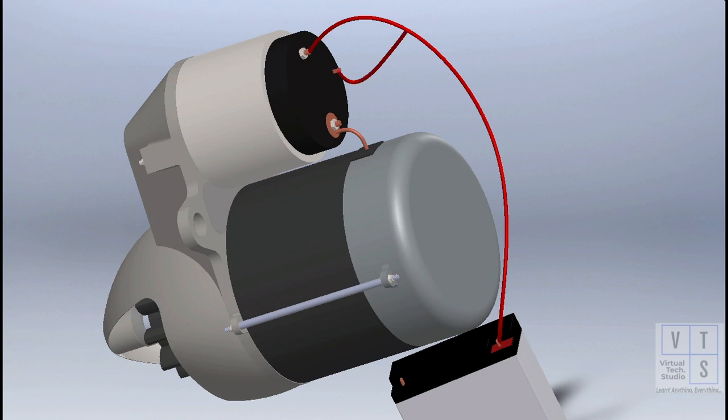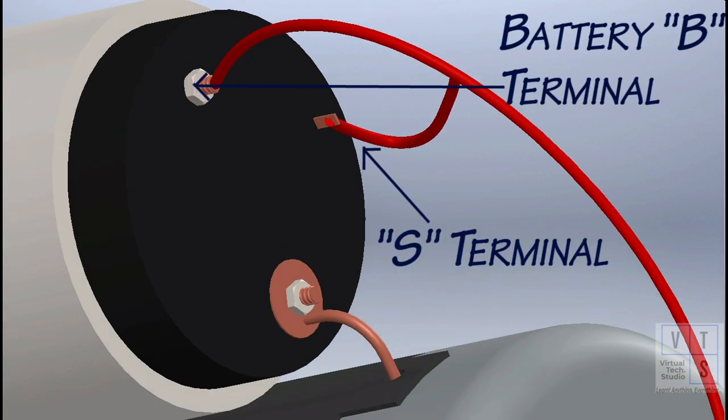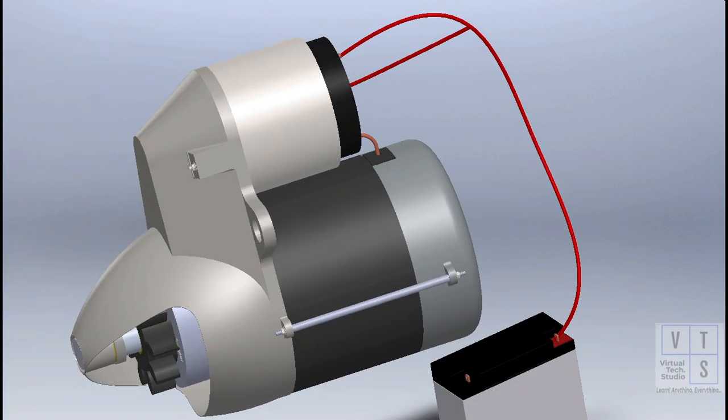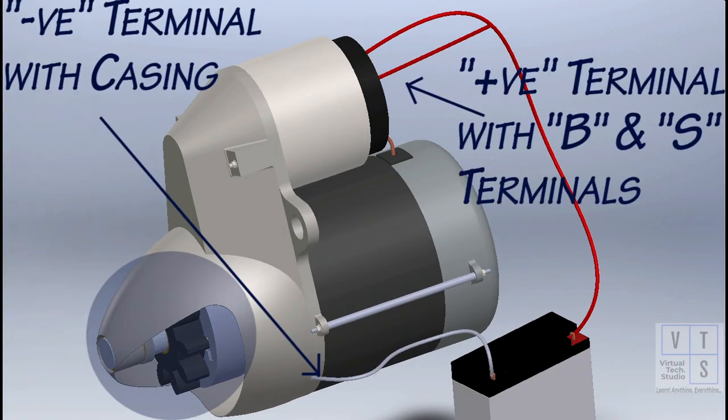Connect the battery positive terminal with B and S terminals of magnetic switch as shown. Connect the negative terminal of the battery with the casing. The pinion should first move forward and then revolve.